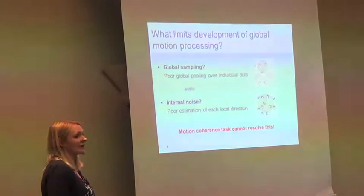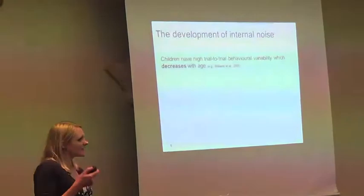It's generally assumed that kids get better at global motion processing because they are able to average more — able to sample even more and more dots. But as Stephen suggested, it could also be that some sort of internal noise might be limiting performance in motion coherence thresholds too. The problem is, motion coherence can't tell us which of those factors are contributing. We're going to speculate a little bit about how internal noise might change in development.